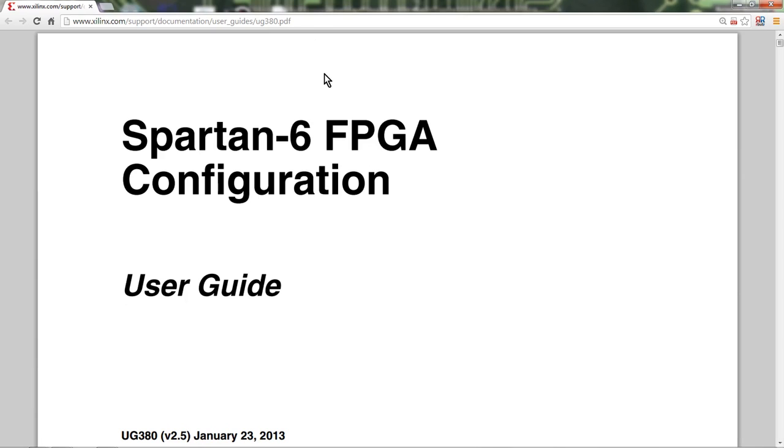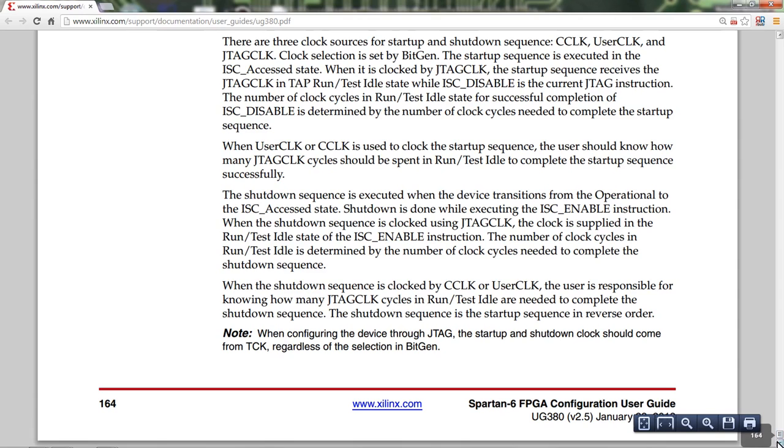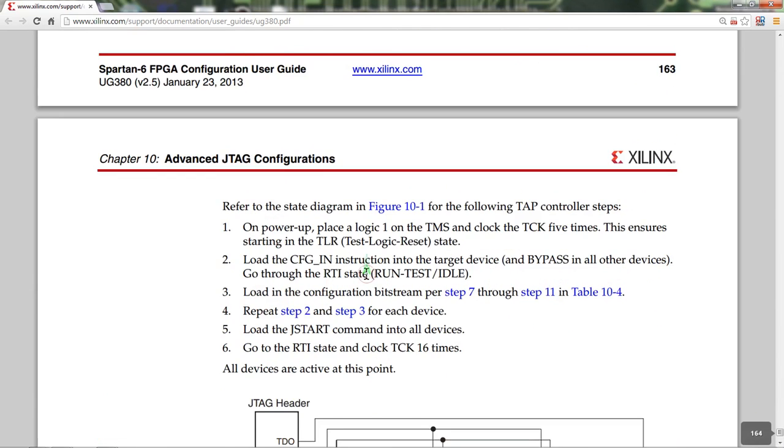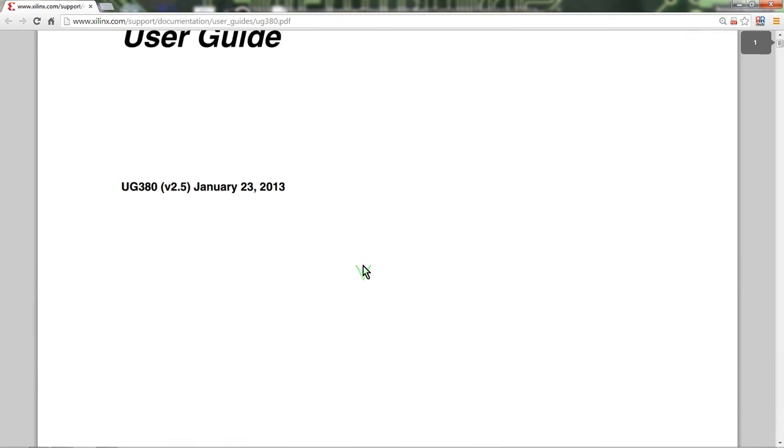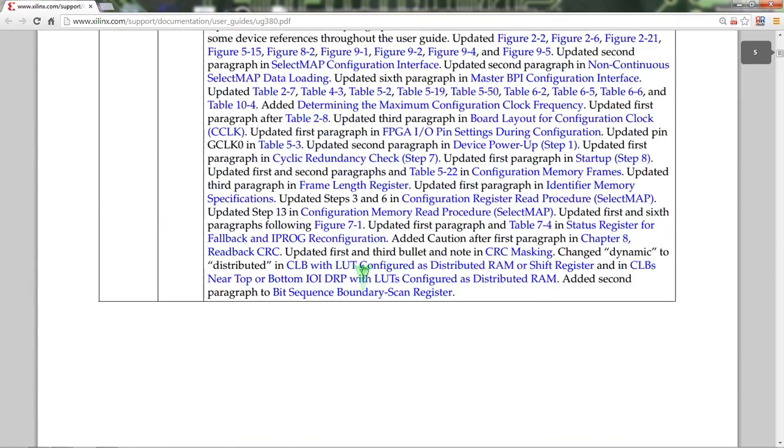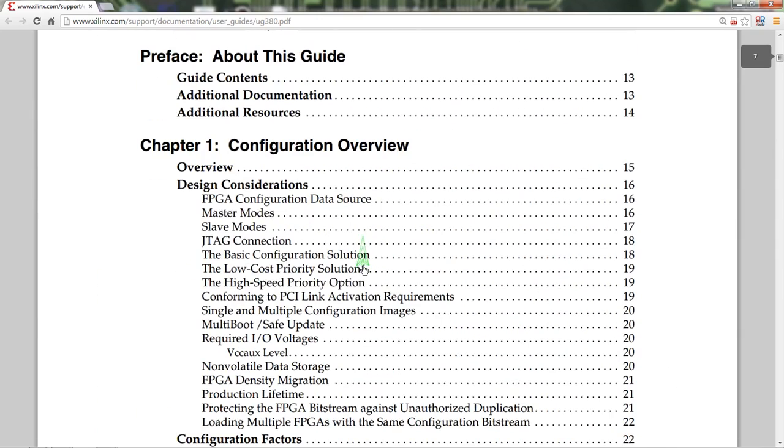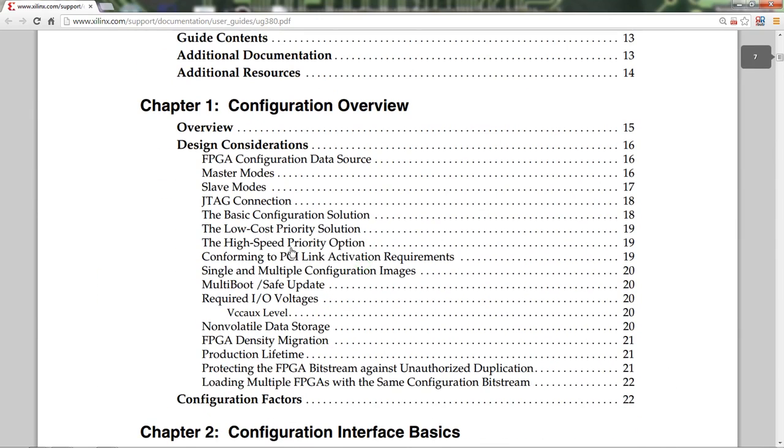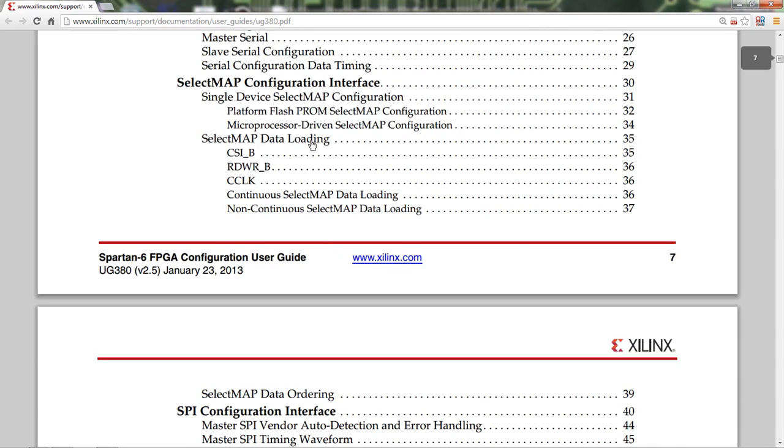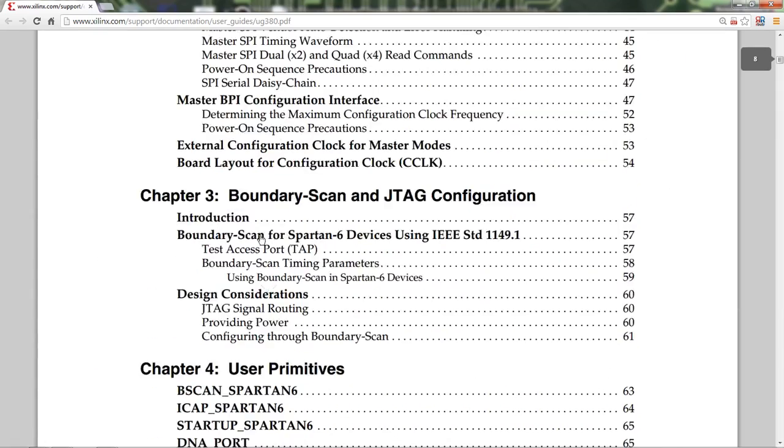And just to show you that I wasn't kidding, here is the Spartan 6 FPGA configuration user guide. This is just for configuring and getting your FPGA up and running and doing what you want. And there's a different one of these for each different Xilinx family, and the other manufacturers will also have similar types of guides. And this guide is, well, 164 pages long, folks. That is just to get the FPGA configuration doing various things. And granted, there are lots of different ways that you can configure FPGAs, but look at this sort of stuff. It's configuring all sorts of high-speed priority options, JTAGs, master slaves modes, multi-boot safe upgrade, select map data loading. Oh, man, you name it, look at it. Unbelievable.